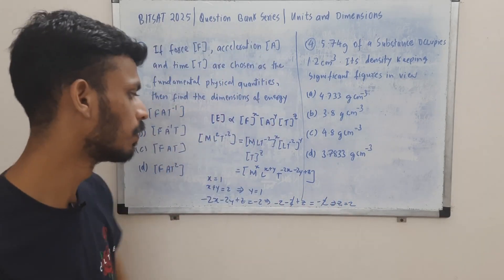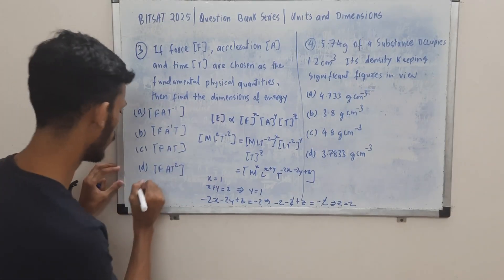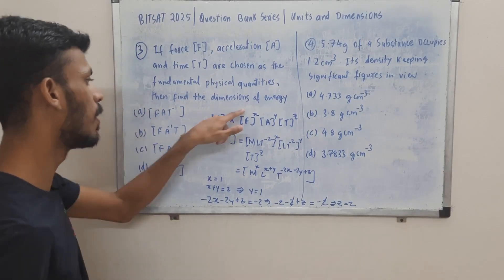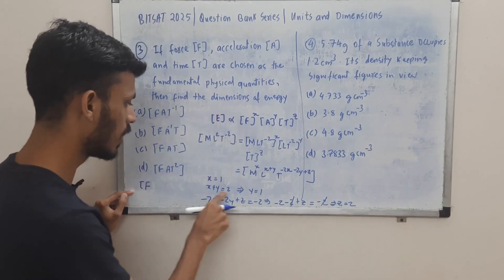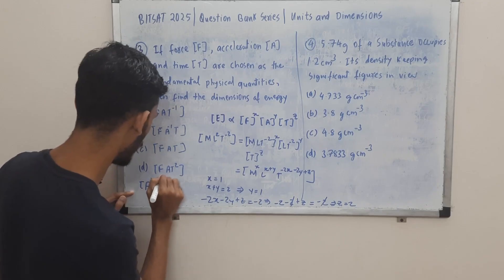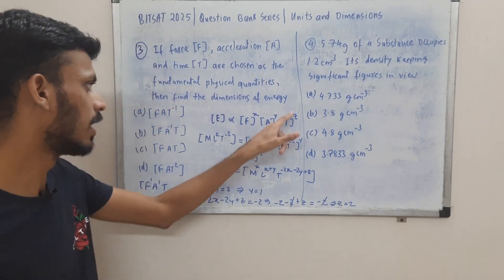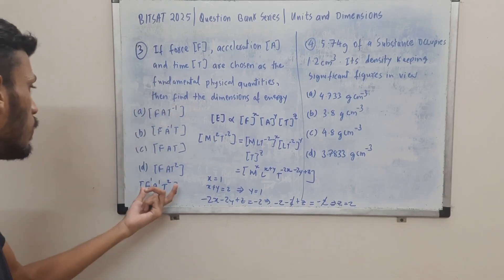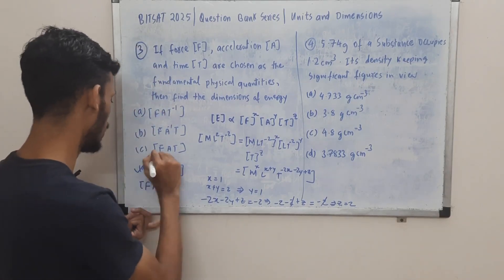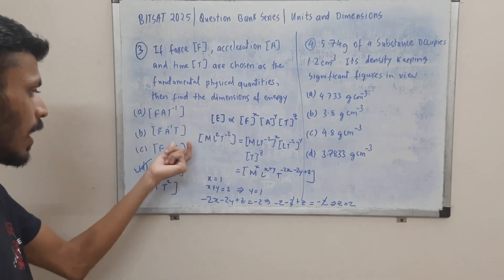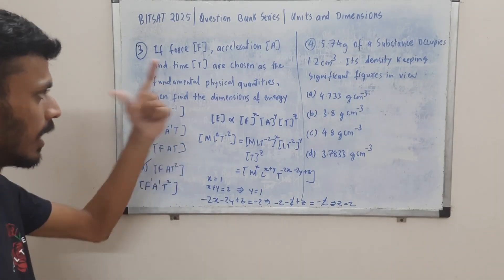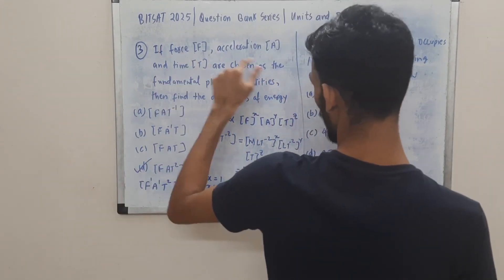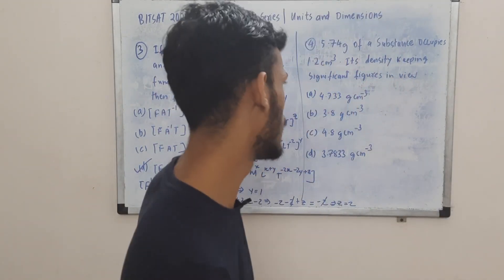So x = 1 (power of F), y = 1 (power of a), and z = 2 (power of t), giving F·a·t² — that is option D. Now question 4: we are given a substance of a certain mass in grams occupying a certain volume in cm³, and we are supposed to find the density while taking significant figures into account. Sometimes they might not mention significant figures, but whenever you have a simple calculation like mass divided by volume, you have to account for significant figures every time.